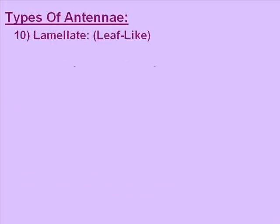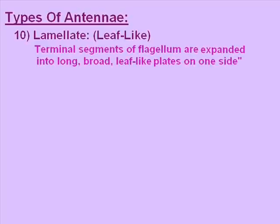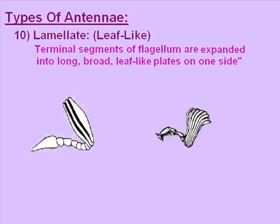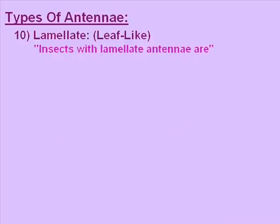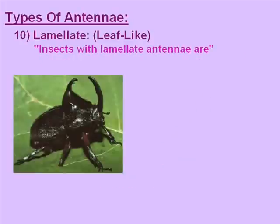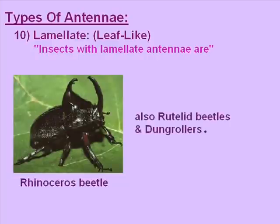The tenth type of antenna is lamellate, meaning leaf-like structure. The terminal segments of the flagellum are expanded into long, broad, leaf-like plates on one side. In the picture we can see the terminal segments expanded into leaf-like plates, and the arrows point towards the lamellate antennae. Insects with lamellate antennae are rhinoceros beetles, rutelid beetles, and dung rollers.